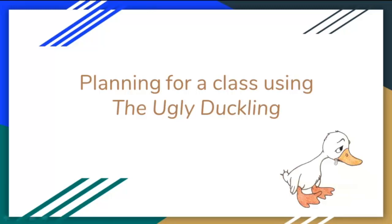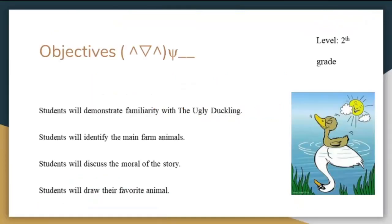As Jose mentioned, we are going to talk about The Ugly Duckling. Since the duckling was bullied, this piece of literature could be very interesting for talking about bullying in class and about respecting others. This is our planning for a class using The Ugly Duckling. The objectives of the plan are: students will demonstrate familiarity with The Ugly Duckling; students will identify the main farm animals; students will discuss the moral of the story; students will draw their favorite animal. This is for second grade.